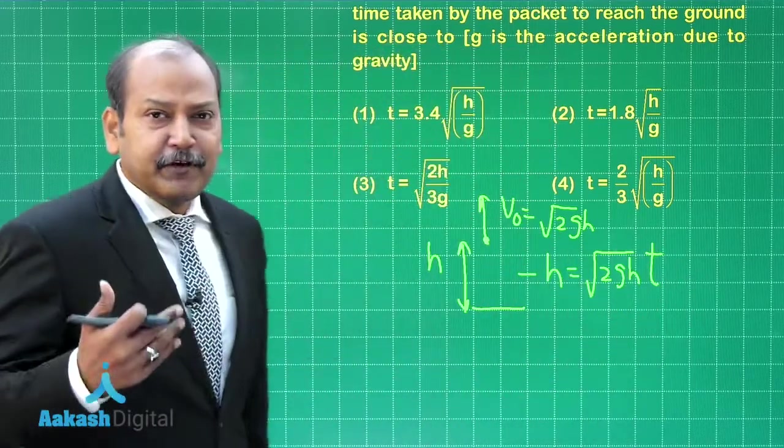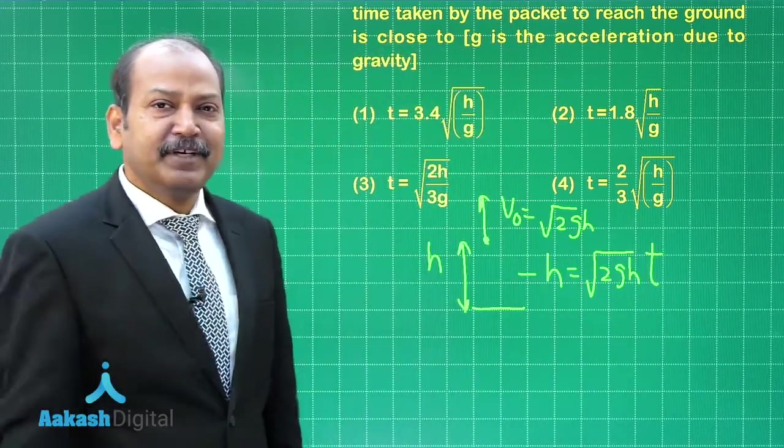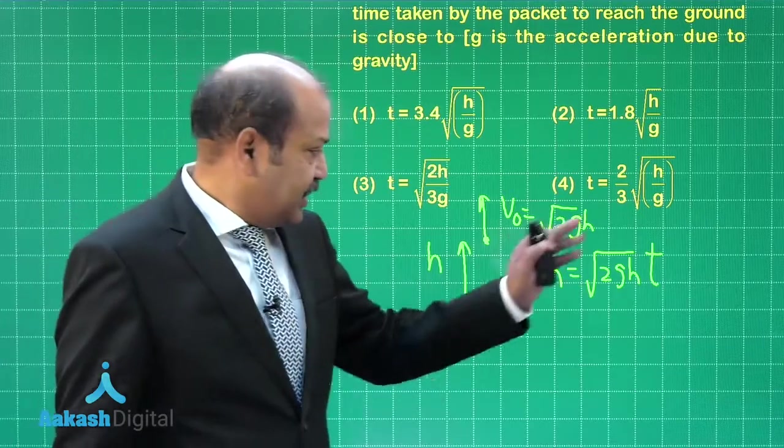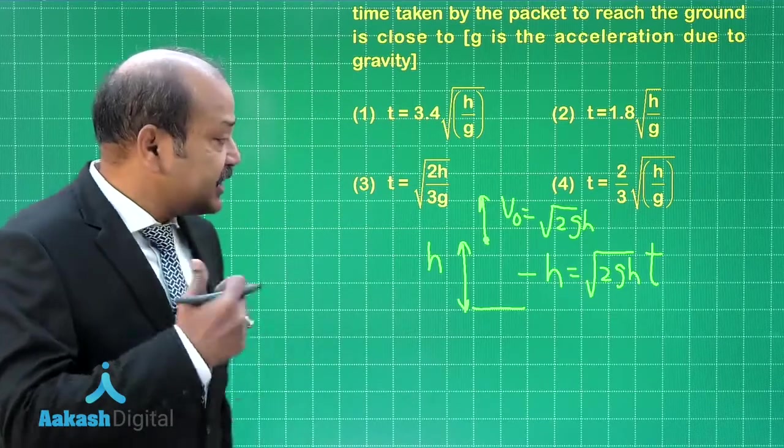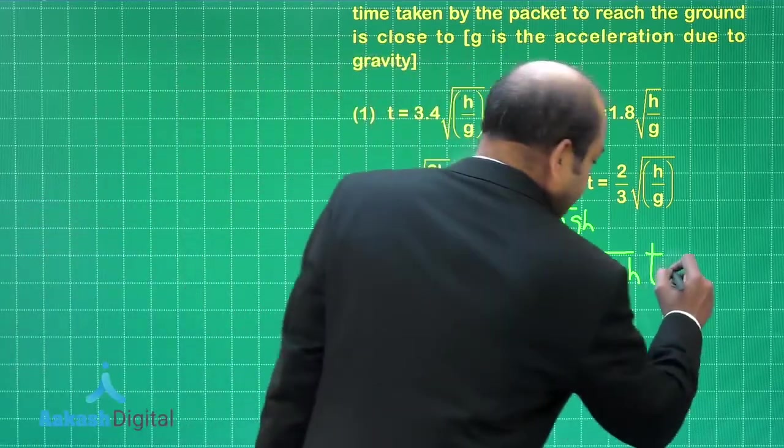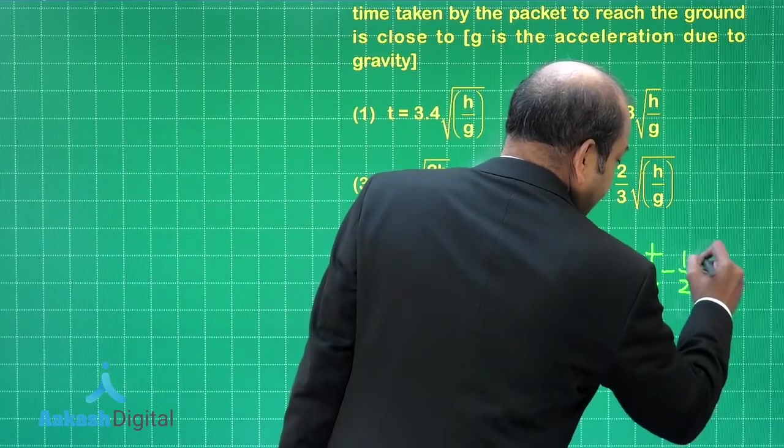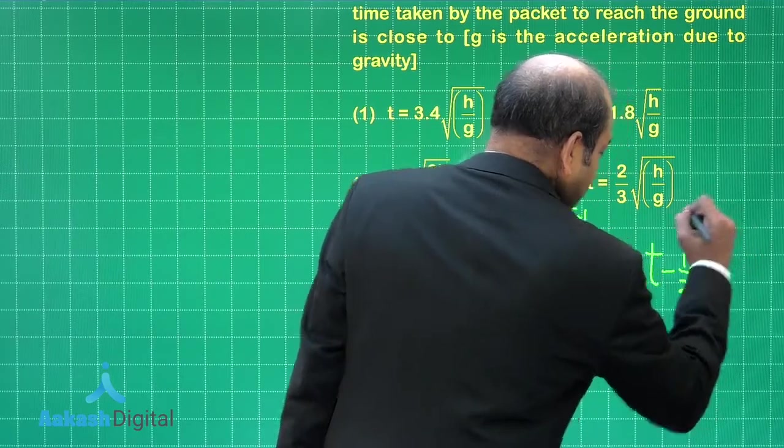We are using the equation s equals ut plus half at square. s is minus h, u is root 2gh and time, and then the other term is minus half gt square. So minus half gt square.